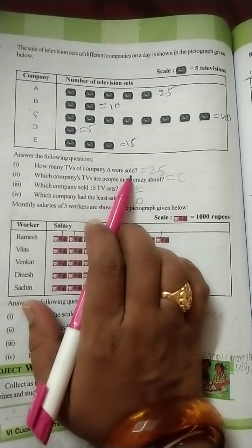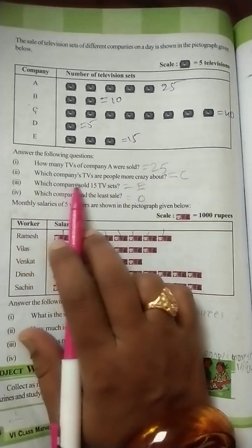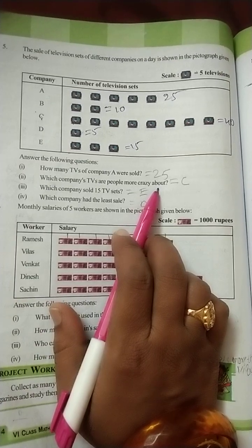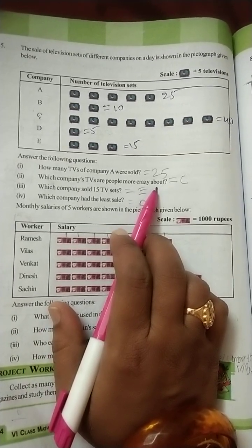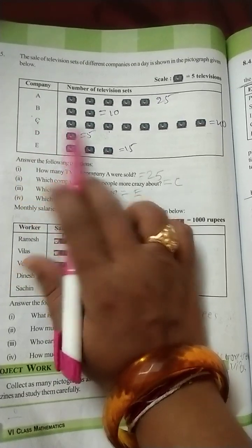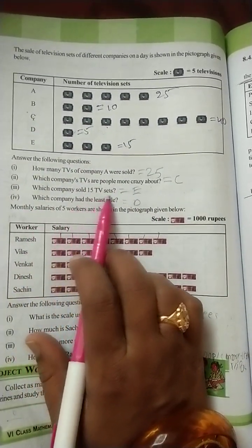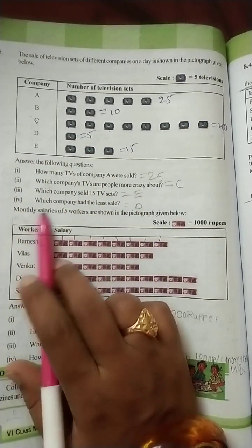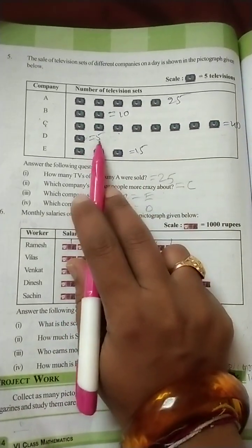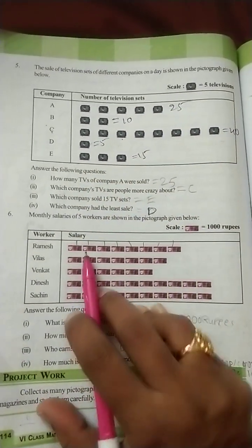How many TVs of company A were sold? Company A, how many TVs? 25. Which company TVs are people more crazy about? More crazy means number of televisions sale. So 40. Company C. Sale 40 televisions. So that crazy company C only. Next which company sold 15 TV sets? 15 TV sets company E. Which company had the least sale? When compared to all others, least number is 5. So company D.